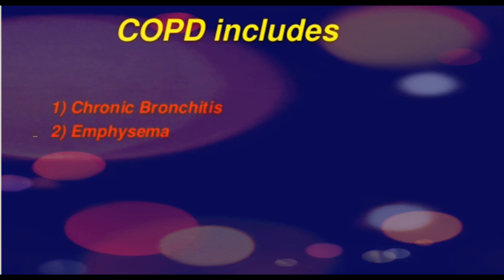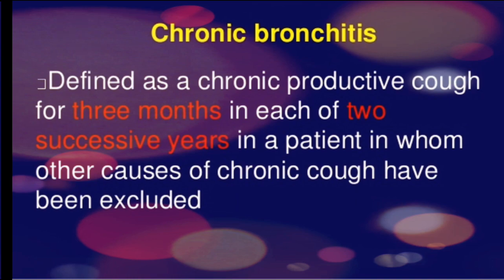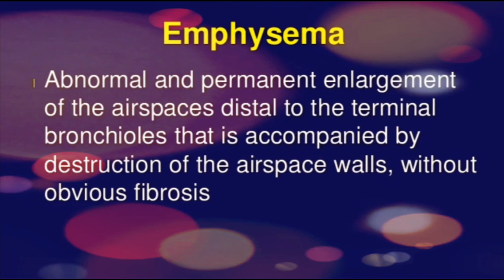COPD includes chronic bronchitis and emphysema. Chronic bronchitis is a chronic productive cough for at least three months in each of two consecutive years in a patient in whom other causes of chronic cough have been excluded — so it is a diagnosis of exclusion. Emphysema is an abnormal and permanent enlargement of air spaces distal to the terminal bronchioles without obvious fibrosis.